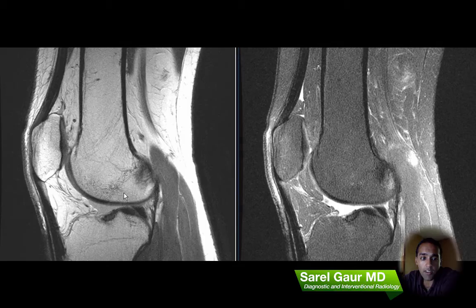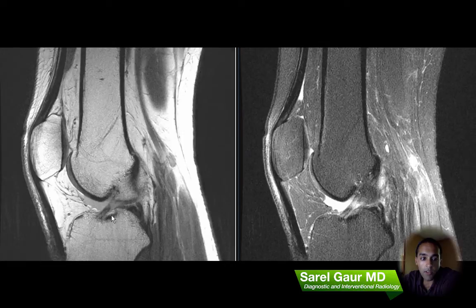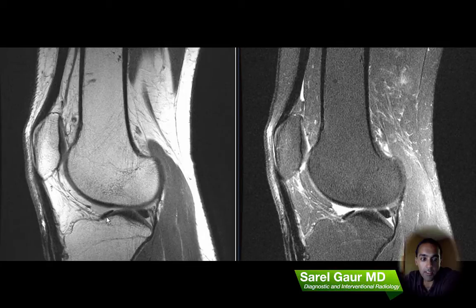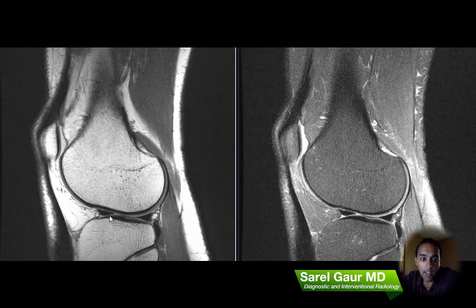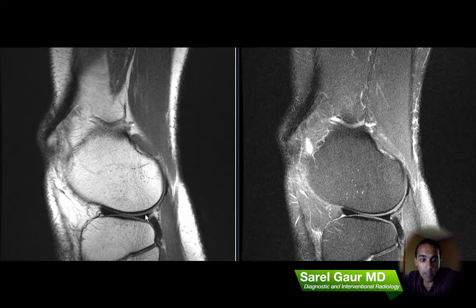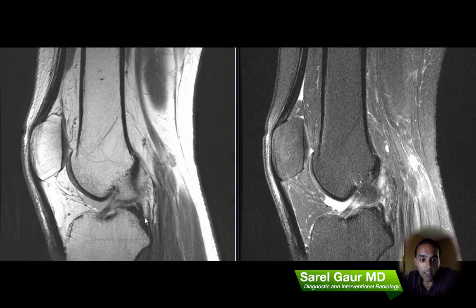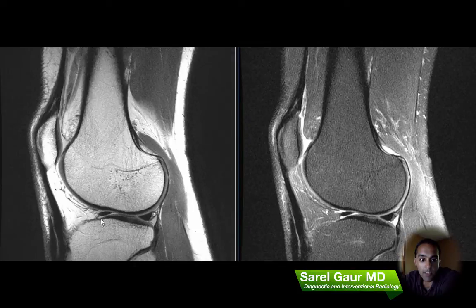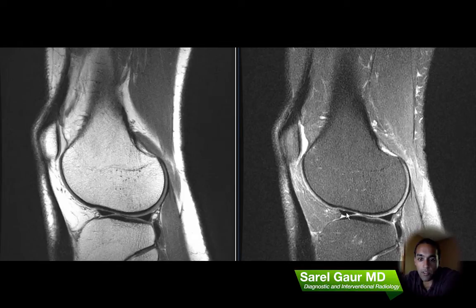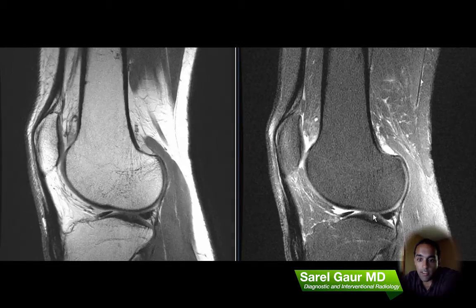I'm going to start looking at the menisci, beginning with the lateral meniscus. Here I can find the root of the lateral meniscus — this is the anterior horn — and I'm seeing this as a dark black triangular structure, which is normal appearance. I trace that out to the body segment and then come into the posterior horn and trace that to the root. I'm basically looking for any evidence of a tear, also using the fluid weighted sequence to see if there's any fluid intersecting between the fibers. I'm not seeing any evidence of tear.